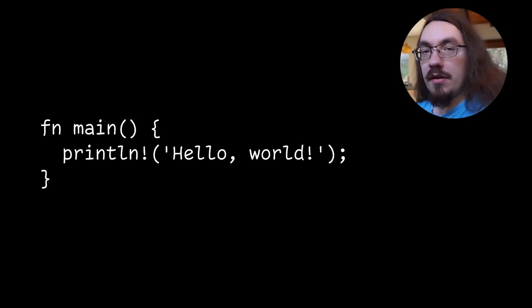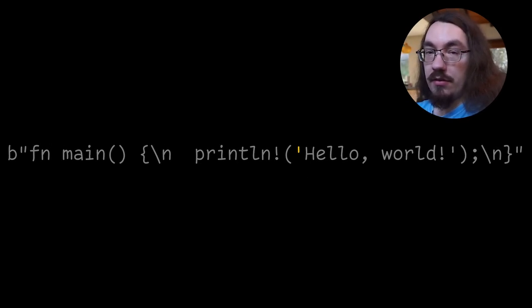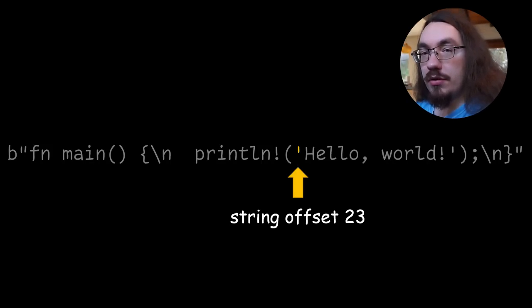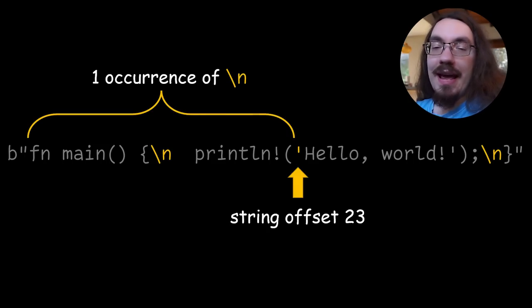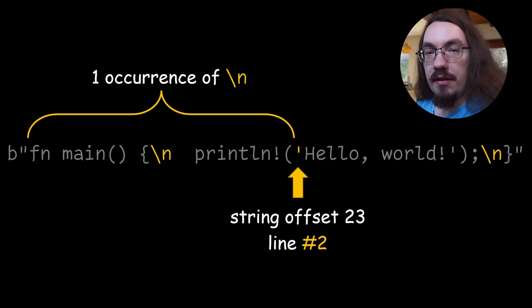So here we have a Rust program, but inside the compiler this is represented as a string. We want the compiler to tell the user about a syntax error, where we use a single quote instead of a double quote. The compiler sees that this is index 23, but it doesn't know what line number it is. So we want to convert the number 23 into line number 2. All we have to do is count how many newline characters there are before our error point. In this case there's only one newline character, which means we're on the second line.